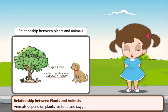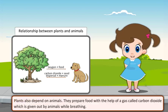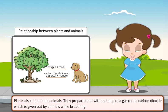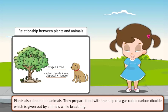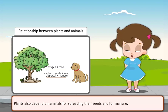Relationship between plants and animals: Animals depend on plants for food and oxygen. Plants also depend on animals. They prepare food with the help of a gas called carbon dioxide which is given out by animals while breathing. Plants also depend on animals for spreading their seeds and for manure.